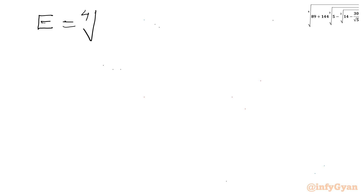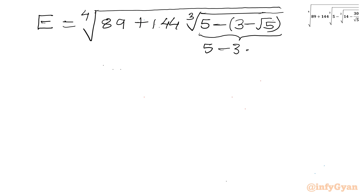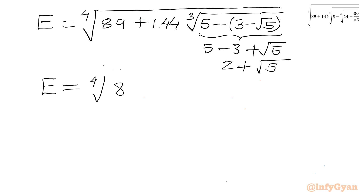So expression E becomes the fourth root of 89 plus 144 times the cube root of 5 minus (3 minus root 5). Simplifying inside the cube root: 5 minus 3 plus root 5 equals 2 plus root 5. So our expression becomes the fourth root of 89 plus 144 times the cube root of root 5 plus 2.